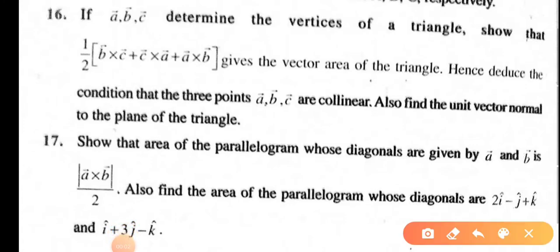The area of a parallelogram whose diagonals are given by vectors a and b is |a × b|/2. Find the area of the parallelogram whose diagonals are 2i - j + k and i + 3j - k.